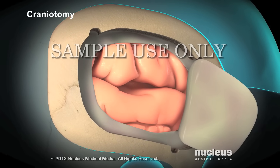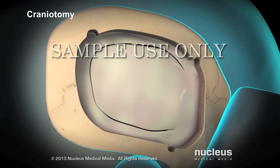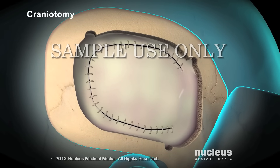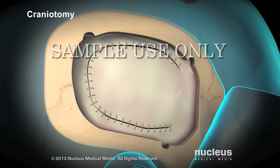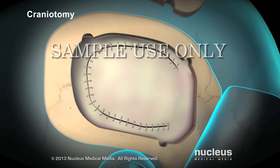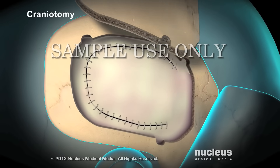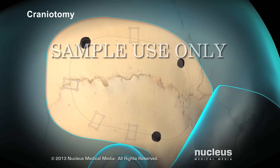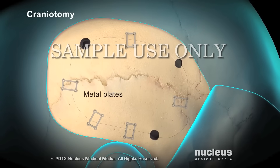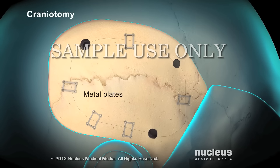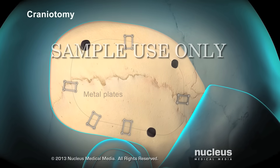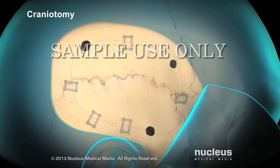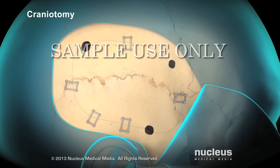The incision in the dura mater will be closed with sutures. Your surgeon will reattach the bone flap with metal plates and screws that will remain in your skull for life.